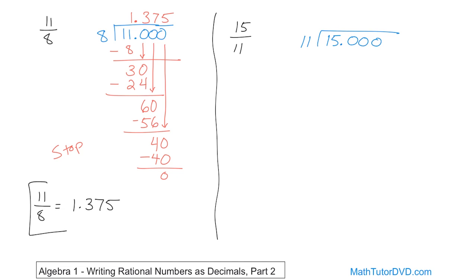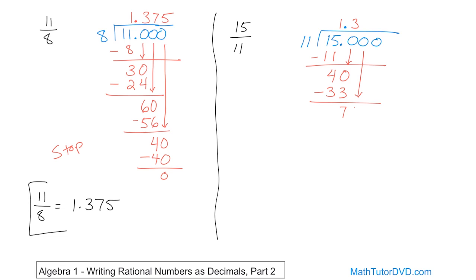How many times can 11 go into 15? It can only go one time. One times 11 is 11, and we subtract: 15 minus 11 is 4. We drag the next zero down. We don't want to forget our decimal, so we bring it up directly above. How many times will 11 go into 40? 11 times 3 is 33, 11 times 4 is 44, so it only goes three times. 11 times 3 is 33, subtract: 40 minus 33 is 7. We drag the next zero down and keep repeating this process of dividing.